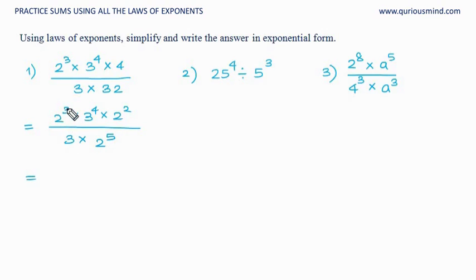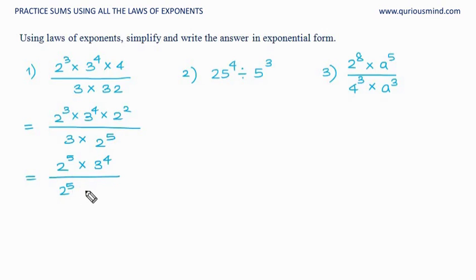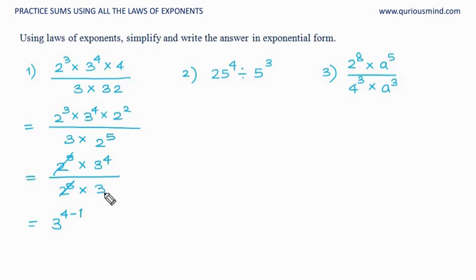Now we know it is 2 raised to 3 multiplied by 2 raised to 2, so that becomes 3 plus 2, giving 2 raised to 5. The 2 raised to 5 terms cancel out, and we are left with 3 raised to 4 upon 3, where 3 alone is the same as 3 raised to 1. So it will be 3 raised to 4 minus 1 — because it is division, base same, powers get subtracted — and the answer is 3 raised to 3.